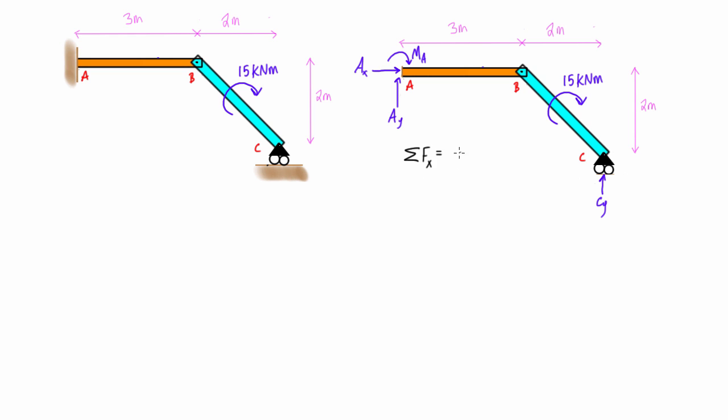So based on this, we can get our sum of forces in x direction, y direction, and sum of moments about some point for the whole structure. And you'll see here that obviously there's only one horizontal force here, so that Ax is going to have to be zero. And then here we have sum of forces in y, Ay and Cy, those have to net out to zero, and then just a sum of moments.